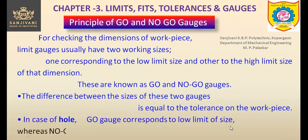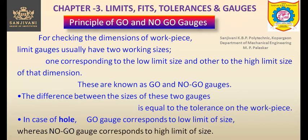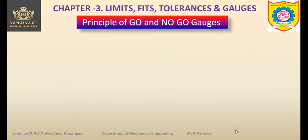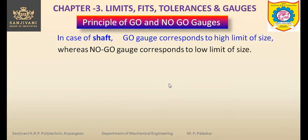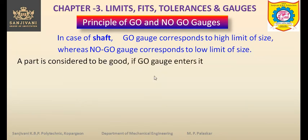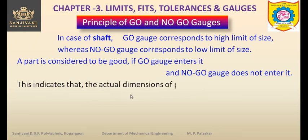In case of a hole, the go gauge corresponds to the lower limit of size, whereas the no-go gauge corresponds to the higher limit of size. In case of a shaft, the go gauge corresponds to the higher limit of size. A part is considered to be good if the go gauge enters it and the no-go gauge does not enter it — this indicates that the actual dimensions of the part are within the specified limits.